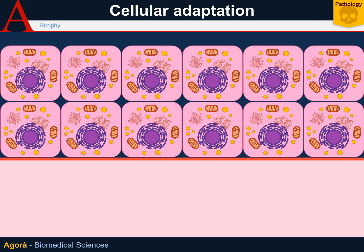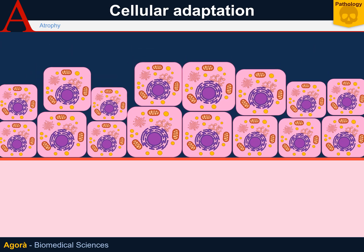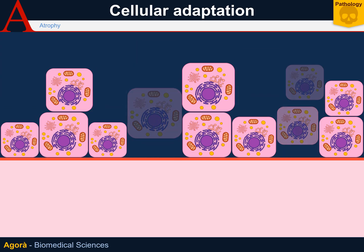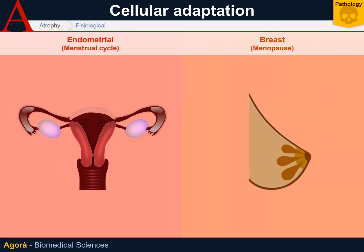Atrophy is defined as a decrease in the mass of an organ, firstly in terms of cell volume and then in the number of cells. But atrophy isn't only a pathological process. In fact, endometrial atrophy occurring during the menstrual cycle or breast atrophy occurring during menopause are two examples of non-pathological processes.